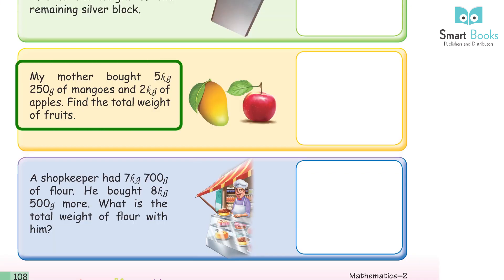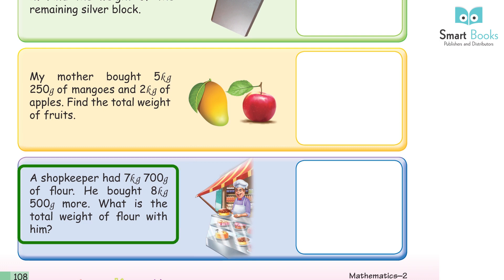My mother bought 5 kg 250 g of mangoes and 2 kg of apples. Find the total weight of fruits. Answer: 7 kg 250 g. A shopkeeper had 7 kg 700 g of flour. He bought 8 kg 500 g more. What is the total weight of flour? Answer: 16 kg 200 g.